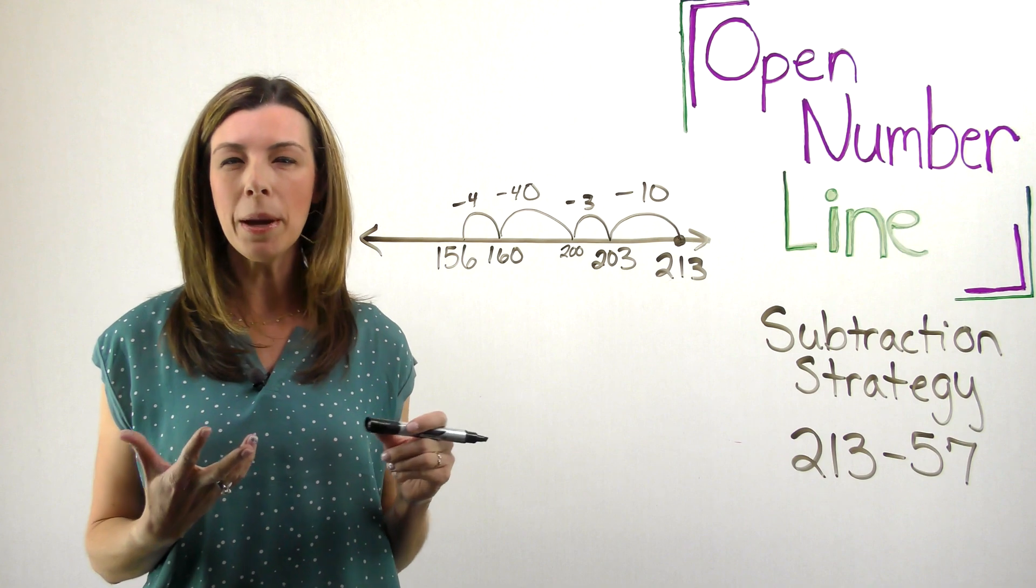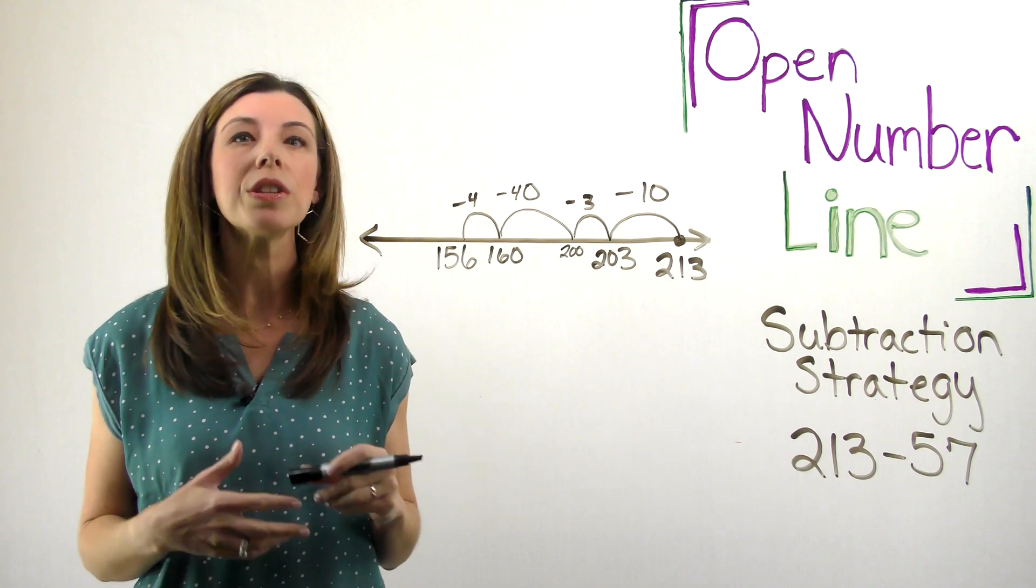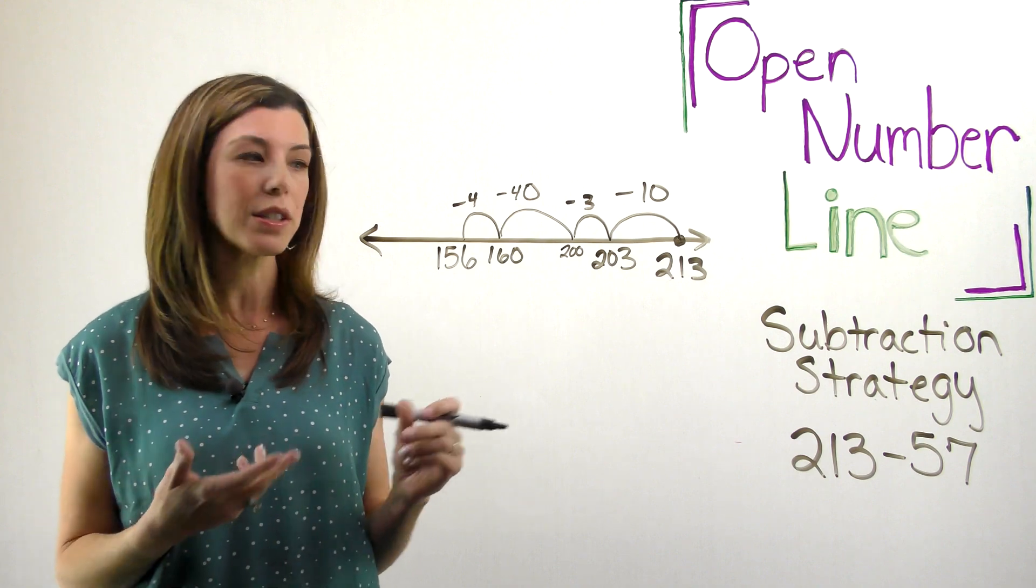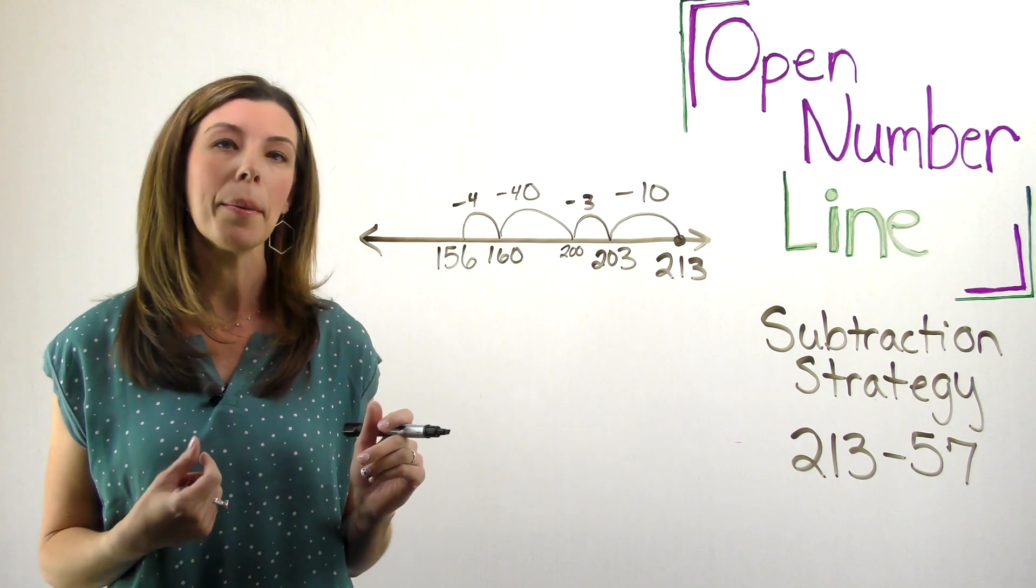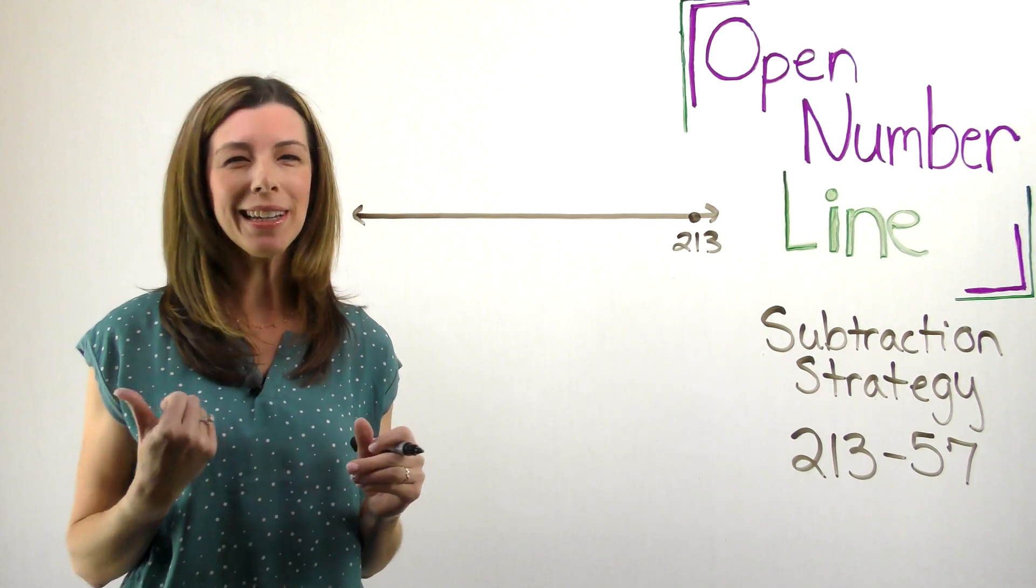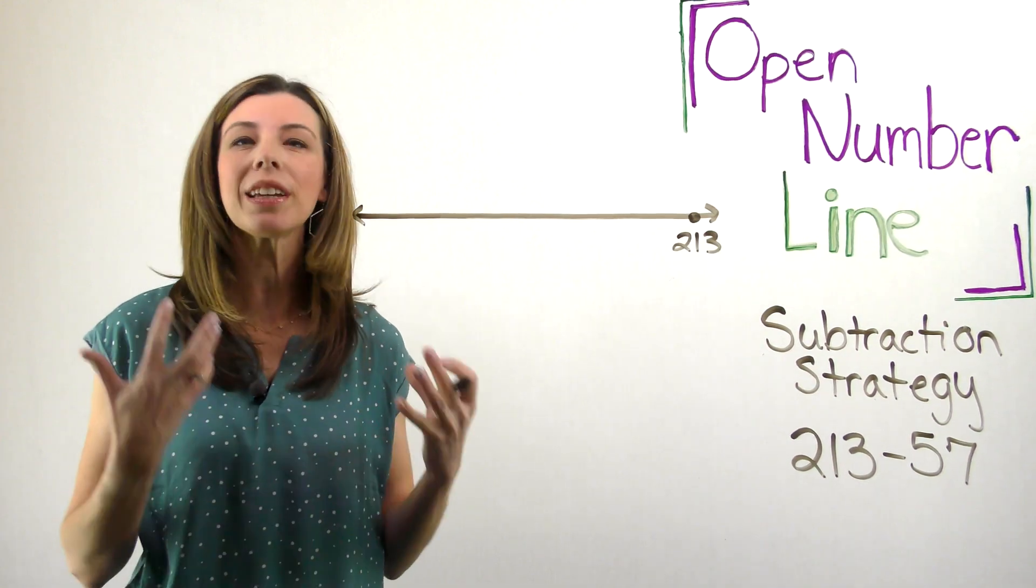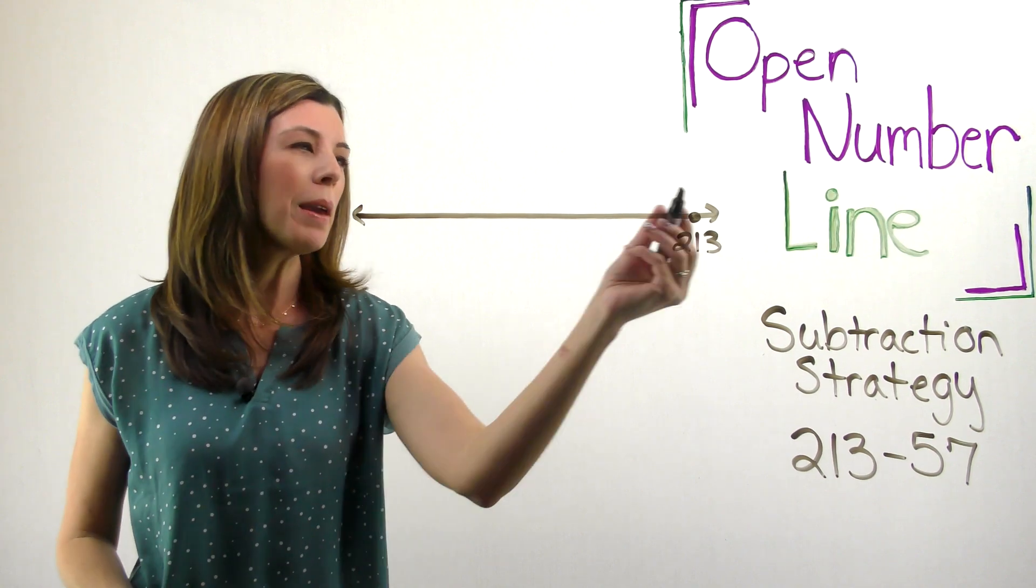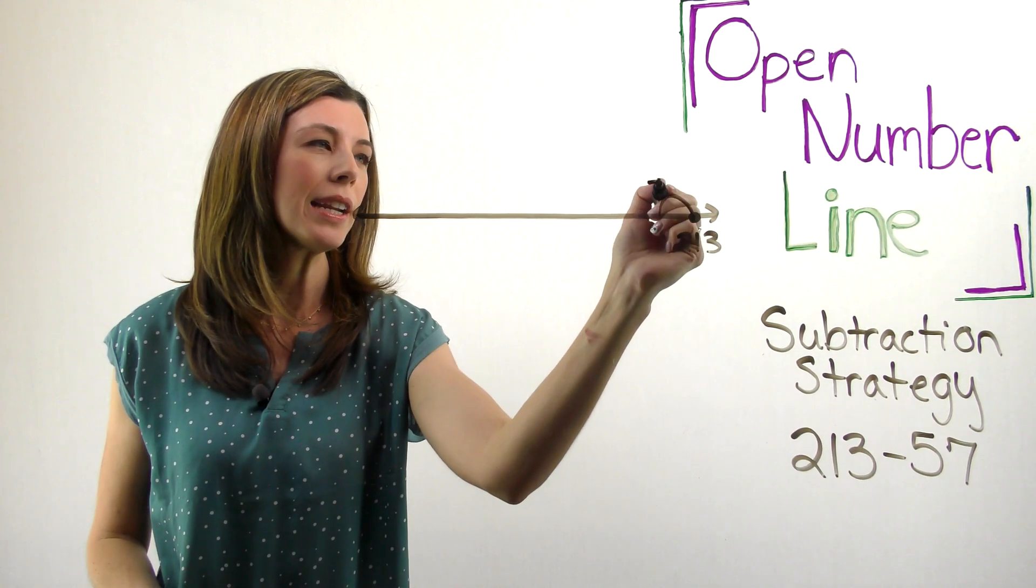Remember, with the open number line strategy, students are going to do this several different ways. Let me show you another way that we could demonstrate this with 213 minus 57. You might have a student that says, I want to get to 210 because I'm really comfortable again once I get to that friendlier number first. So maybe I'm going to start by subtracting 3. I could do that.